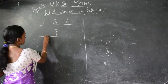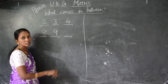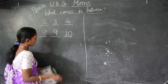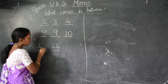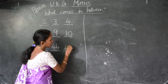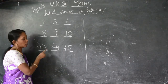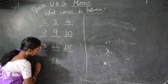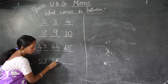Next one, 9. So before and after — what will come? Before 9 is 8. After 9, write 10. Write it down in your book children. Complete this page. Next one is 44. Before 44, what will come? 43. After 44, what will come? 45.